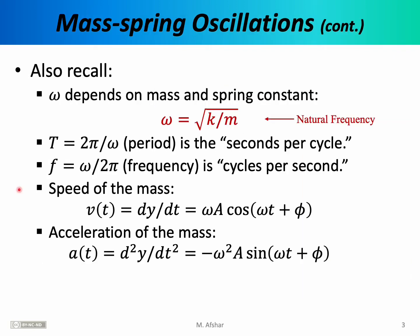There are a few other facts to review about the mass-spring system. The angular frequency depends on the mass and the spring constant of the system. We can express omega as the square root of k over m, assuming a simple mass-spring system without any damping or driving force. In the context of oscillations, we also often talk about the period — the number of seconds required for one complete cycle. Given k and m, one calculates omega, and given omega, one can calculate the period as 2 pi over omega.